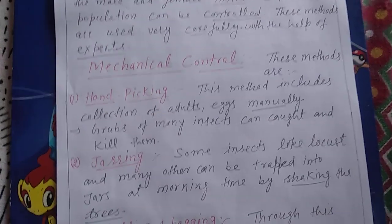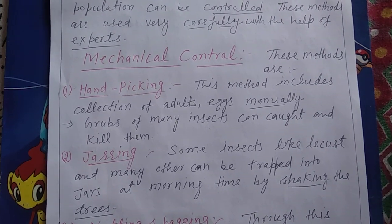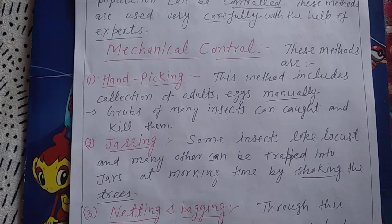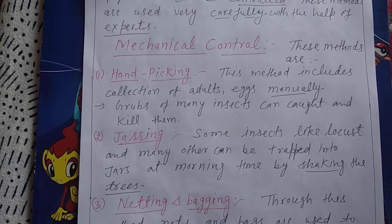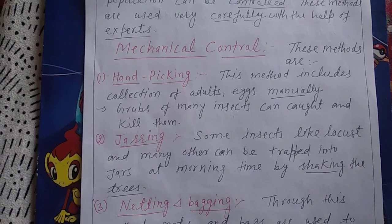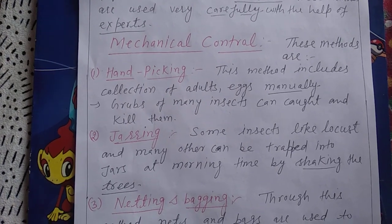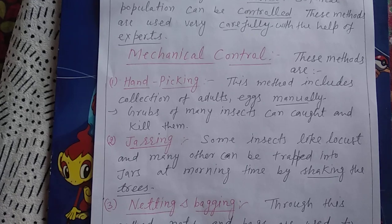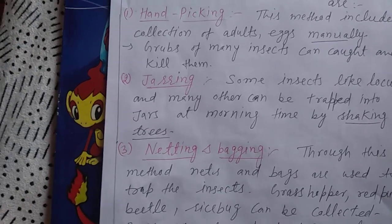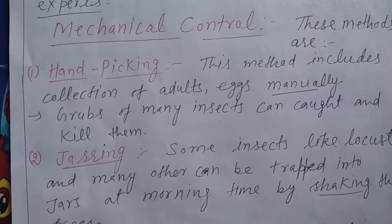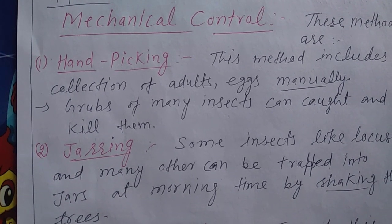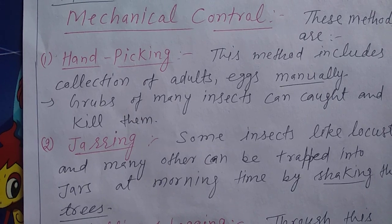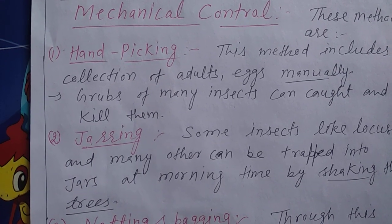The second major category is mechanical control. In these methods we use handpicking, netting, bagging, and similar techniques. This method includes the manual collection of adult insects and eggs from infested plants.